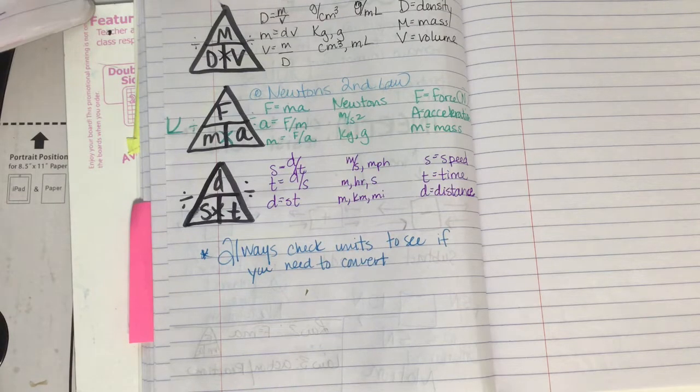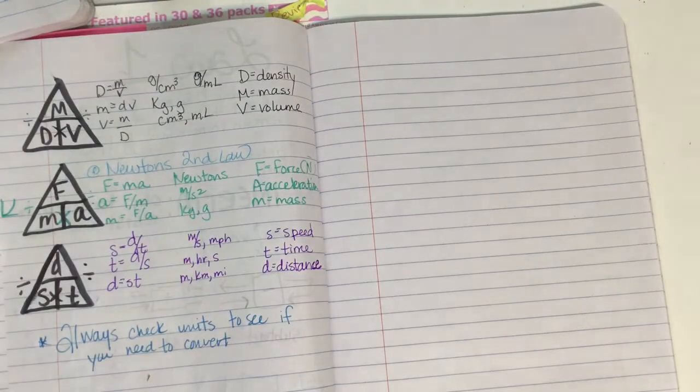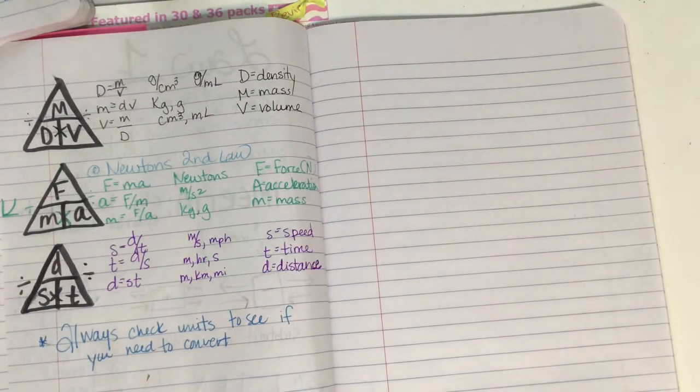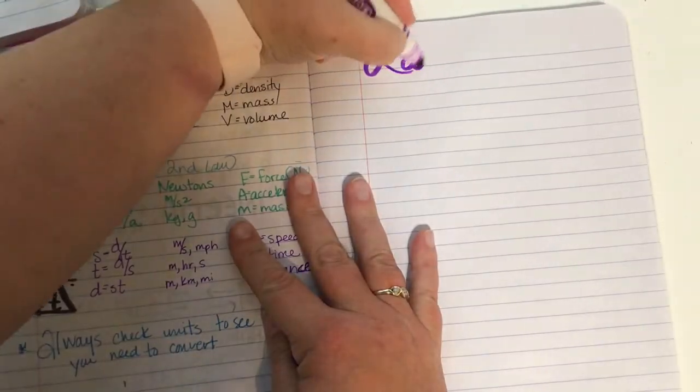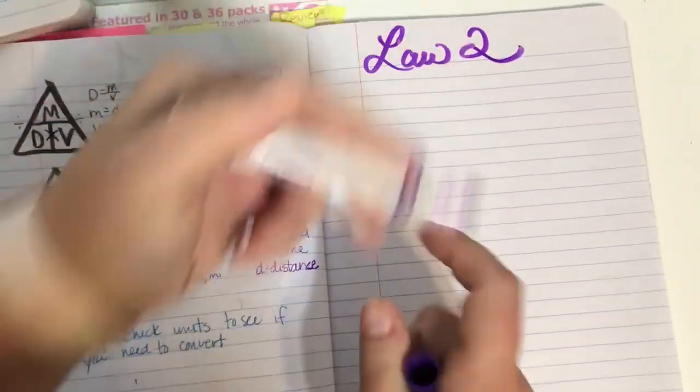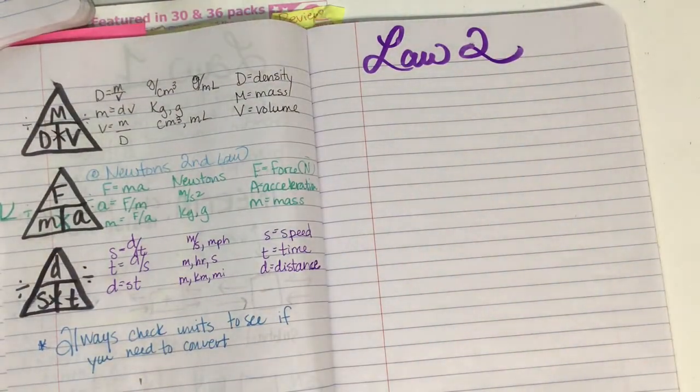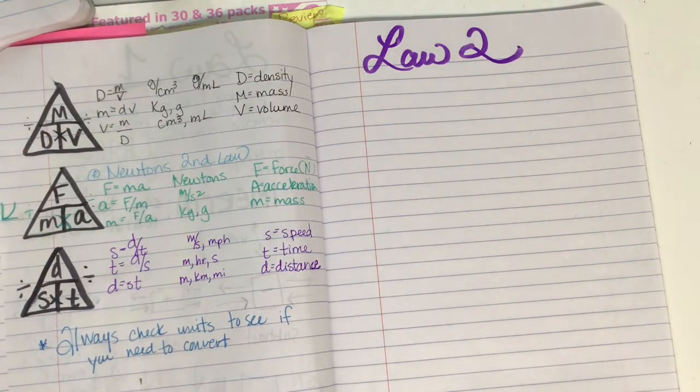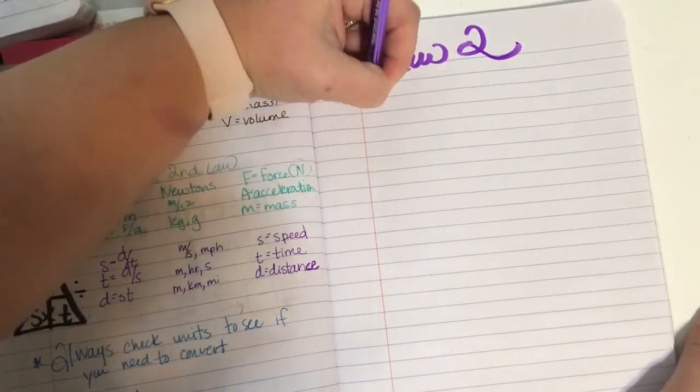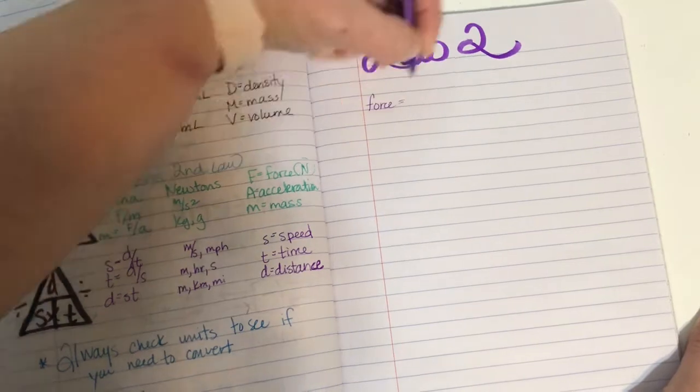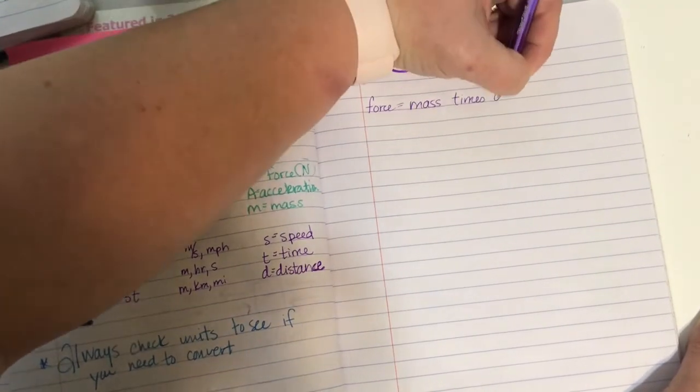Let's talk now specifically about law two. So in my journal on the next blank page, I'm going to write law two. This is Newton's second law of motion. And Newton's second law tells us it's very simple actually. That force equals mass times acceleration.